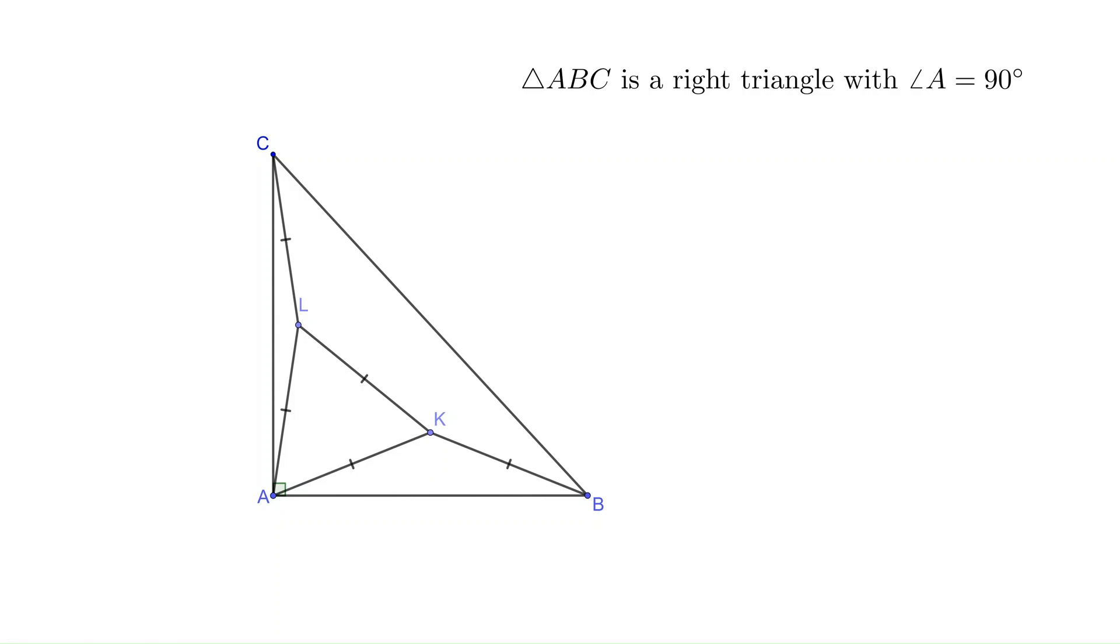ABC is a triangle with angle A equal to 90 degrees. The hypotenuse BC has length 38.